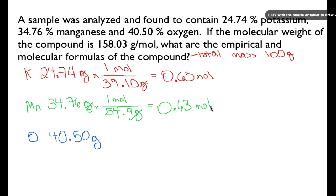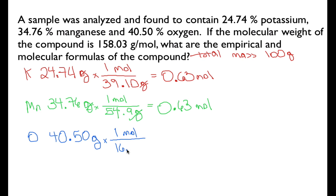We're going to do the same thing for the oxygen data — convert the grams to moles of oxygen. One mole of oxygen has a molar mass of 16 grams. Grams cancel, and in this case we have 2.53 moles of oxygen.